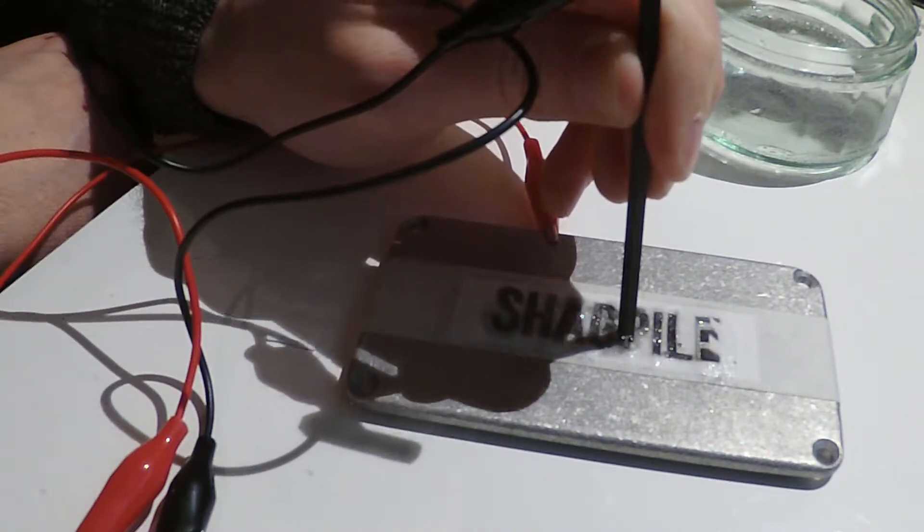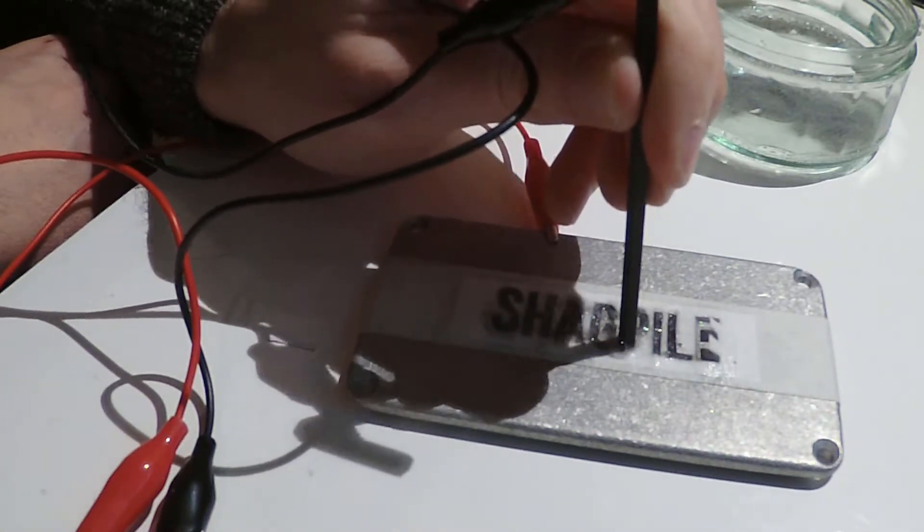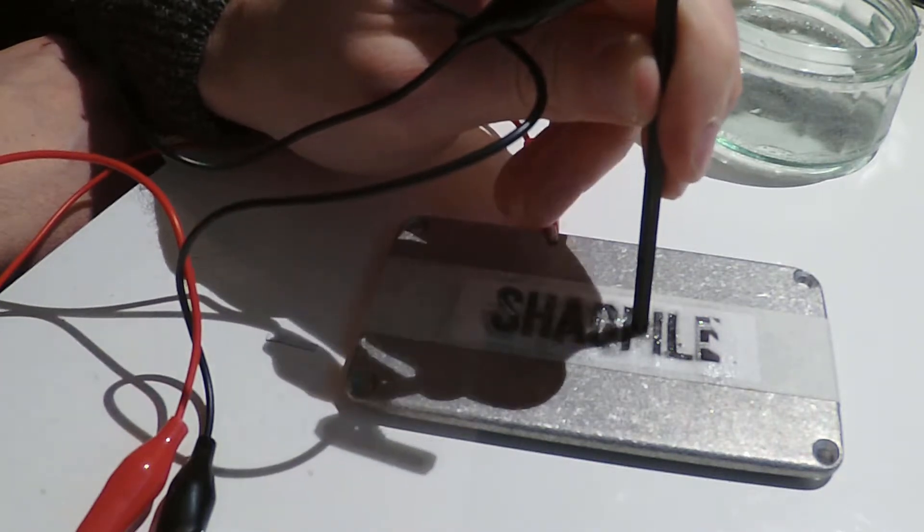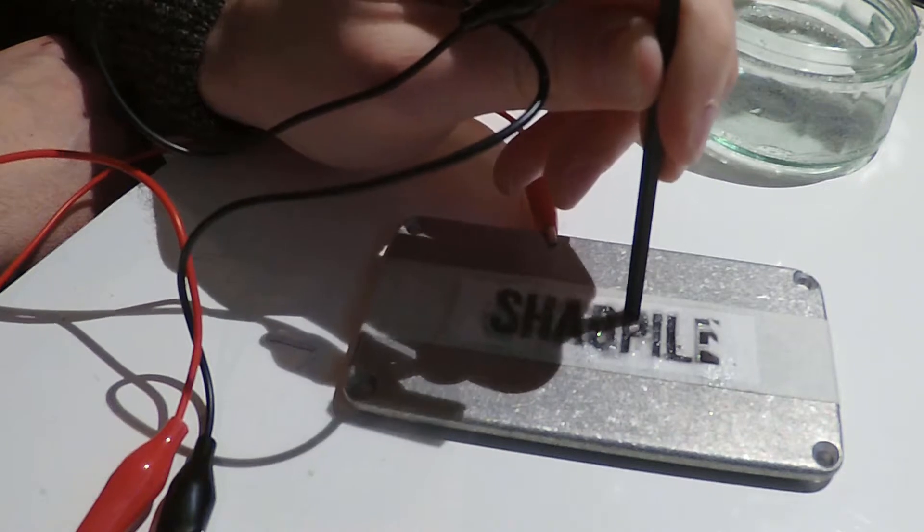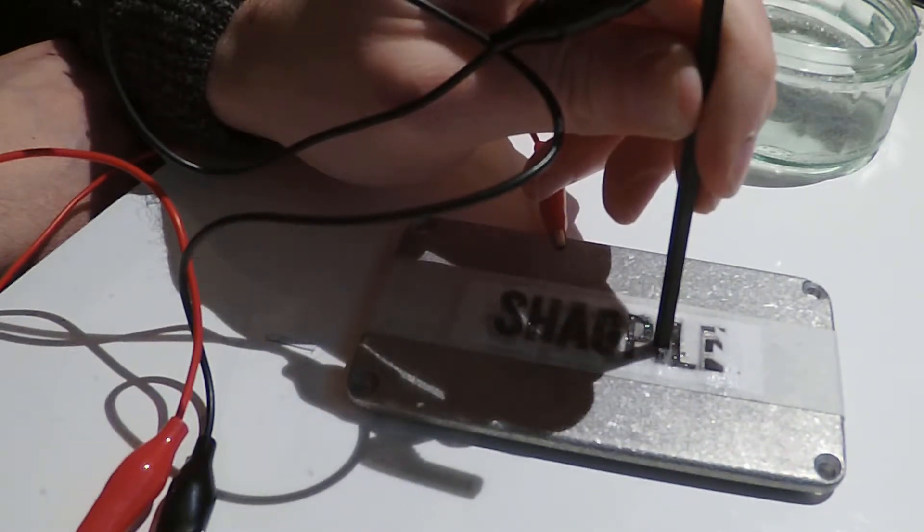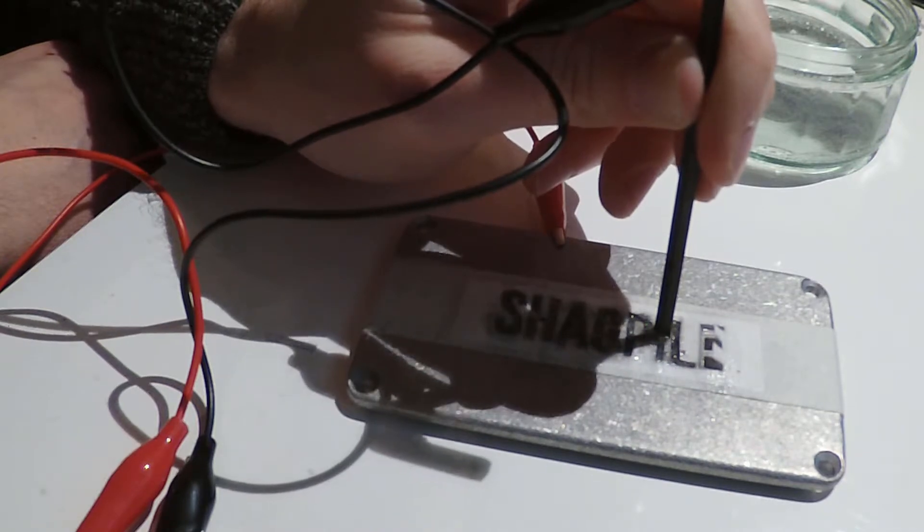You can go over it and then what I tend to do is dab it dry with a paper towel, just check you've got a nice even coverage of the etch and then afterwards you can go over it again by applying a little bit more salt water if you need to and then etching a bit more.